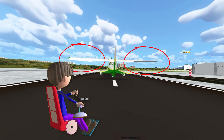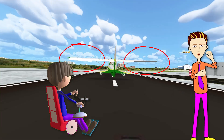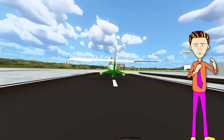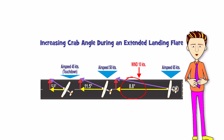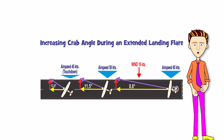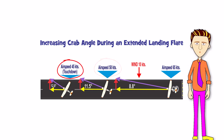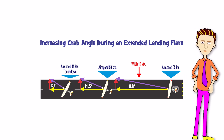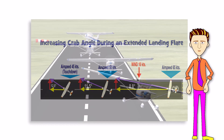Correct execution of the crabbing method of crosswind landings requires good timing on your part — it's not as easy to do as the wing-low method, which is coming up next. During the landing roundout and flare, the airplane's airspeed is decreasing. Since the airplane is crabbed into the wind at some angle, there's a sideways component of the airplane's speed that is neutralizing the wind's crosswind component. As the airplane slows down during the flare, that sideways component of movement decreases as airspeed decreases, but the wind's crosswind component essentially remains the same.